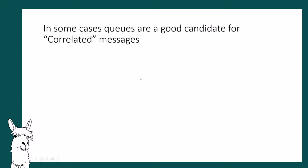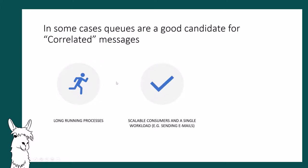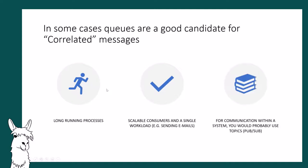This approach is a good candidate for queues when you have a long-running process: if you're going off to do some processing and need to come back and know what called you, that makes sense. Things like sending emails, or where you have scalable consumers — more than one thing dealing with a single workload — also make sense with queues. But if you're trying to communicate within your system, you might want to use a topic. Which raises the question: can we use topics for request-response?